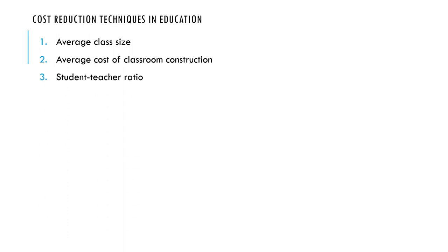Now look at the student-teacher ratio. In the use of a laboratory, for example, if you make it 20 students to one teacher you're going to need to build more laboratories, which may be unaffordable. So instead, increase it to 35 students to one teacher. With that, you are reducing costs. But again, while reducing costs, do not compromise the quality.